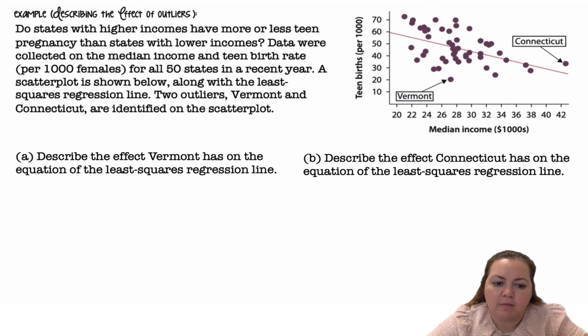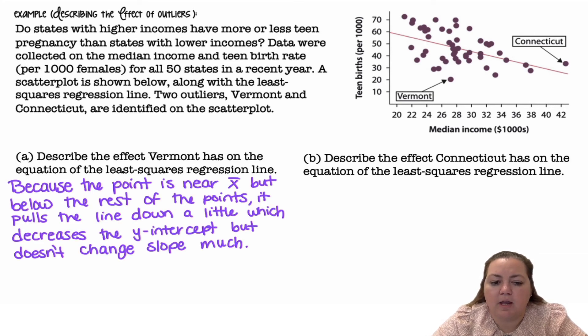All right, describe the effect Vermont has on the equation of the least squares regression line. Okay, so because the point is near x bar, so the mean of your x values, but below the rest of the points, it's going to pull the line down a little, which decreases the y-intercept, but doesn't change the slope. It's just sliding the line down. So the y-intercept, this point here, it would decrease, but the slope is not changing.